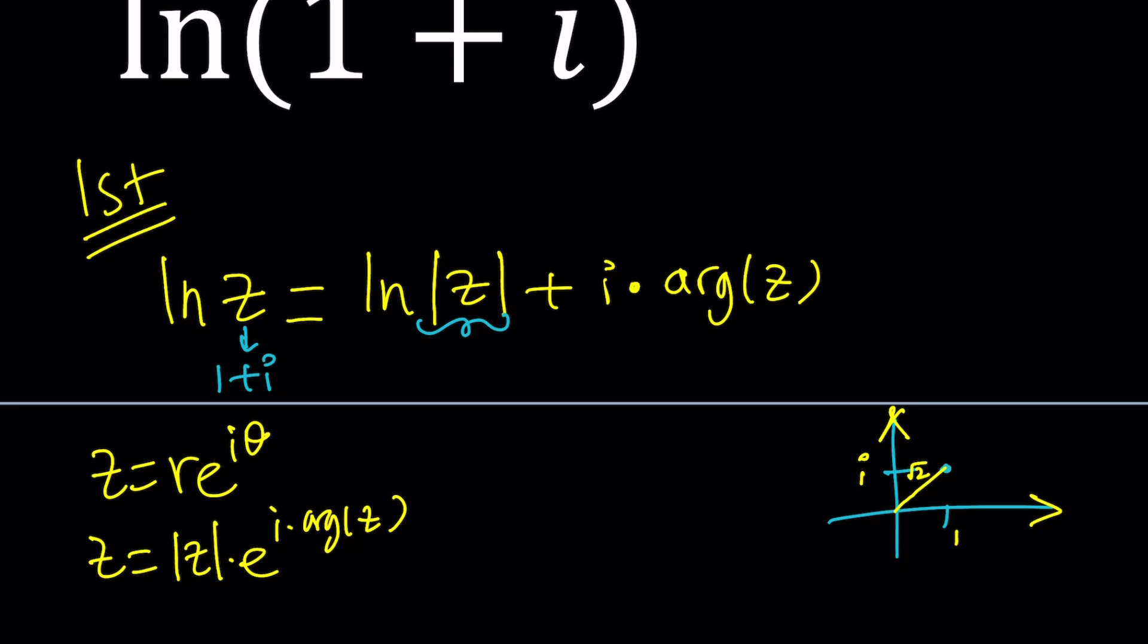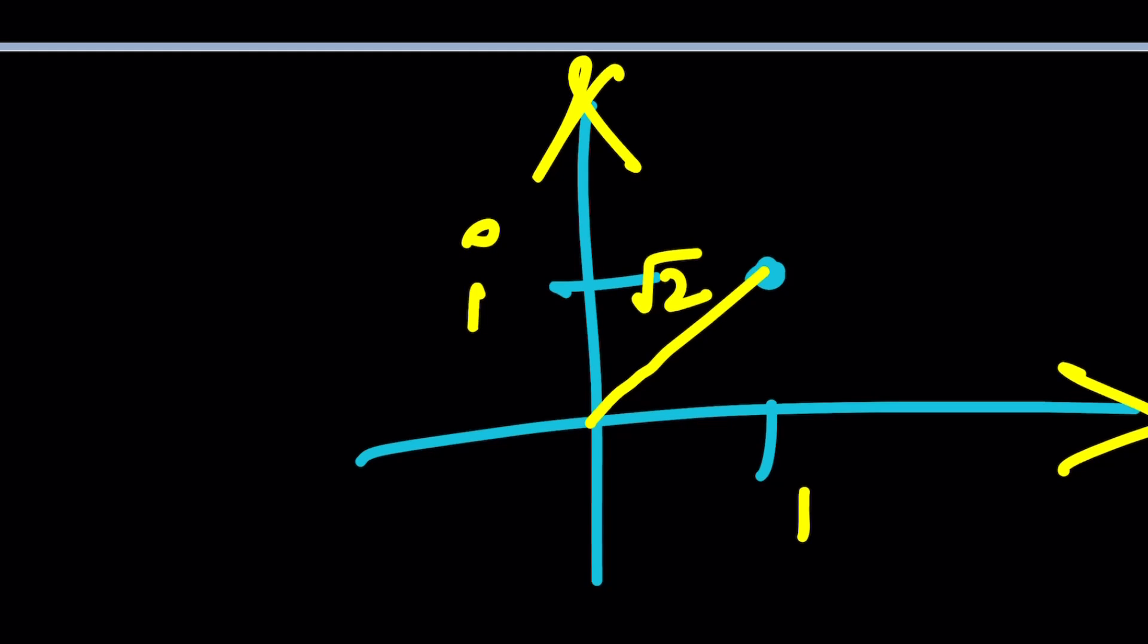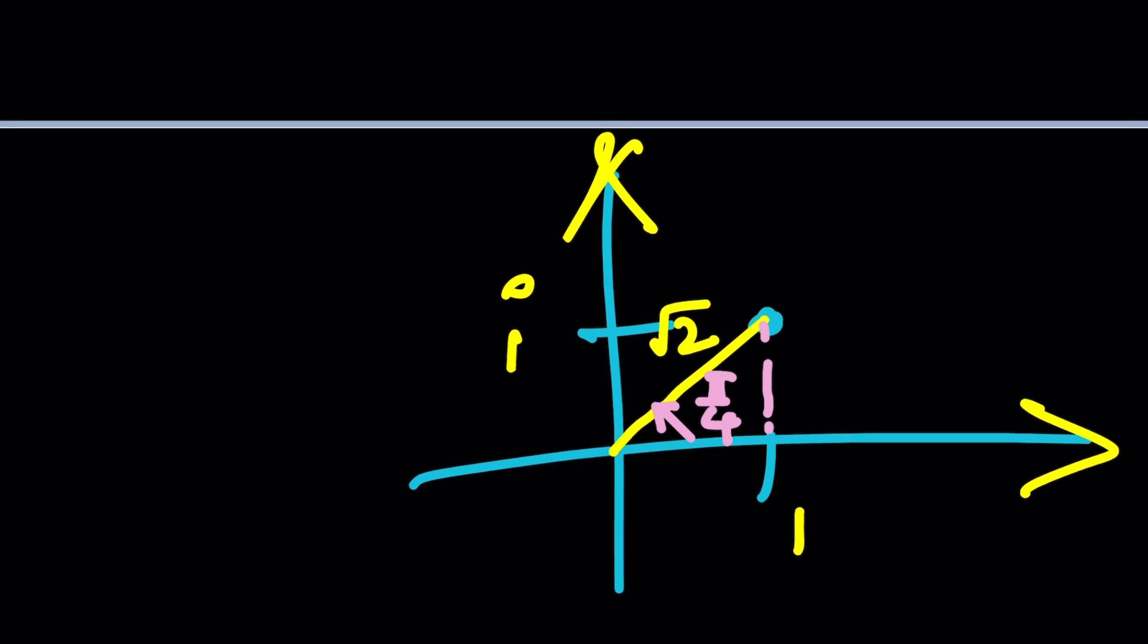An argument of z is basically, let's zoom in a little bit, right? It's going to be this angle right here, and that is pi over 4. Why? Because this is an isosceles triangle. Make sense?